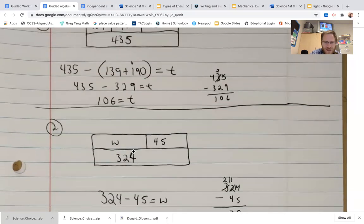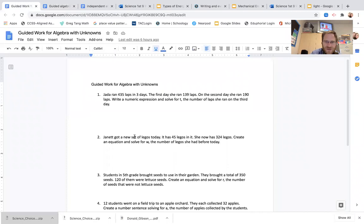So we know that she got a set of 45, which makes that a total of 324. So let's go back and make sure we're doing this right. Yeah, so she now has 324. She got a set with 45 in it. We want to know how much she had before today.